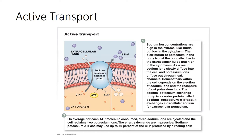Active transport processes require energy. There are two types we will discuss: primary active transport, secondary active transport, and vesicular transport. All use ATP to move solutes across a living plasma membrane, and membrane proteins are generally used as carriers. In this scenario, we are moving solutes against their concentration gradient.